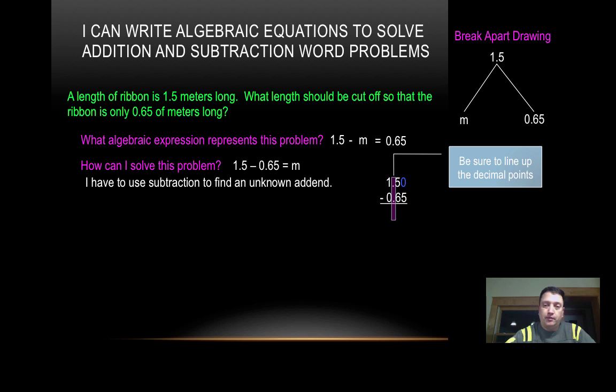So now we just have to bring that decimal point straight down. Now I recognize I'm going to have to borrow here to solve this. So I'm going to go through all those steps that I would normally use when I go to borrow. And when I do that, I end up with 85 hundredths. So 1 and 5 tenths minus 65 hundredths equals 85 hundredths.